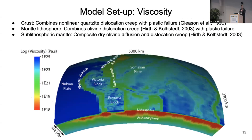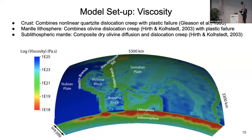For the viscosity setup, we aimed to be as realistic as possible. For the crust, it combines non-linear quartzite dislocation creep with plastic failure — the most relevant part for this community, as it could be coupled with surface processes. In the mantle lithosphere we have dislocation creep with plastic failure, and in the sublithospheric mantle, composite rheology — a harmonic average of diffusion and dislocation creep.